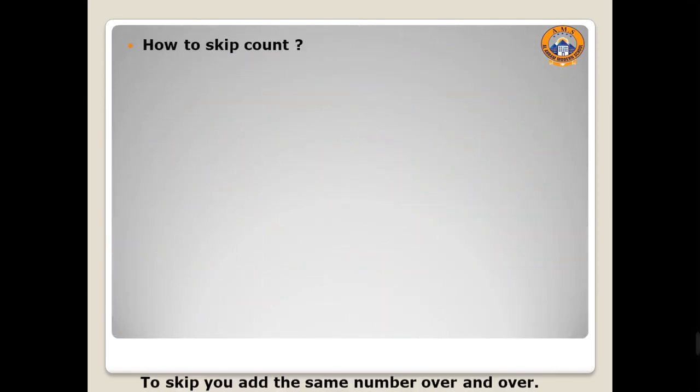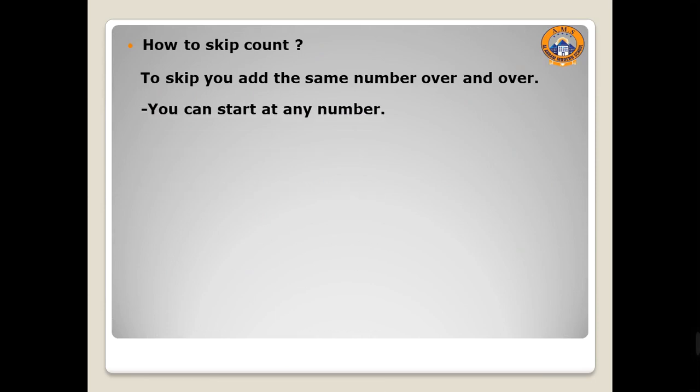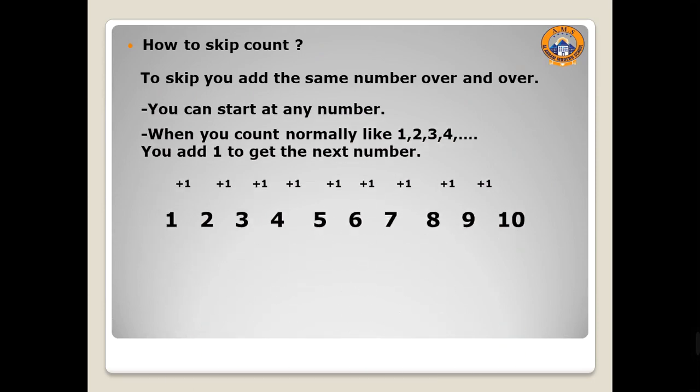How to skip count? To skip, you add the same number over and over. You can start at any number. When you count normally like 1, 2, 3, 4 and so on, you add 1 to get the next number.